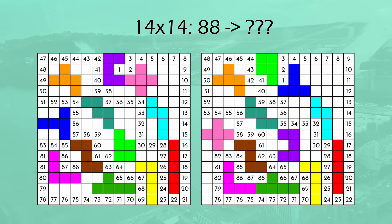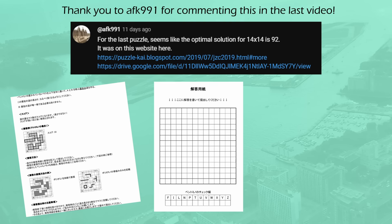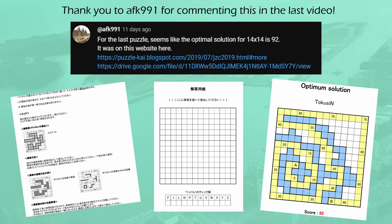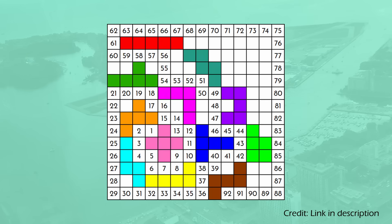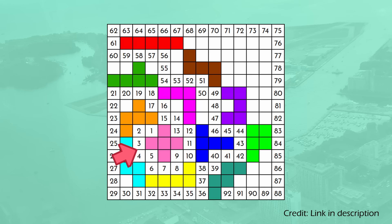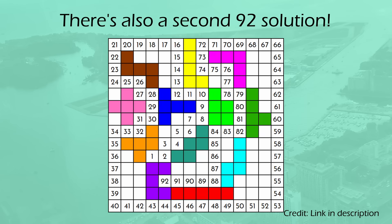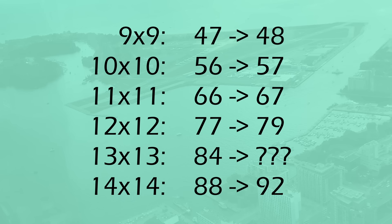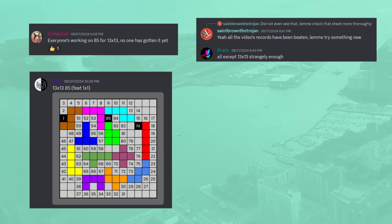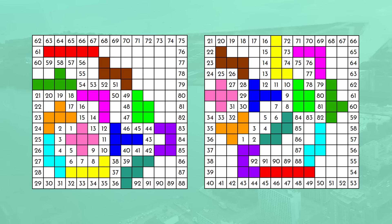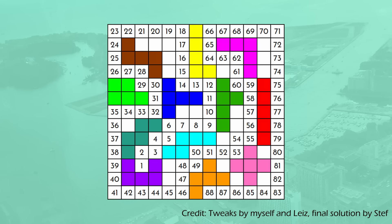The 14x14 was also improved — we found out people actually did this puzzle before in a large-scale puzzle festival, and they were significantly better than us. As a result, the optimal path jumped from an 88 to a staggering 92. Last time the X pentomino was the only one that was absolutely useless, but this time it is actually one of the most useful, as the path weaves perfectly around it. For the 13x13, there was a big struggle to find an improvement, but eventually parts of the optimal 14x14 path from the puzzle festival were taken and built upon, improving it from 84 all the way to 88.